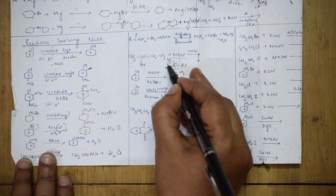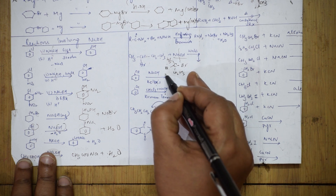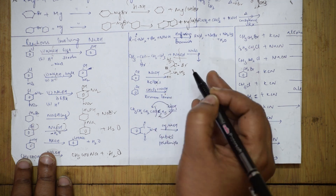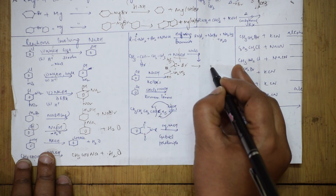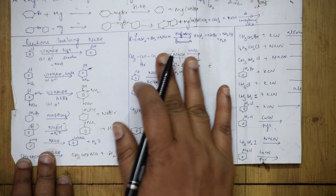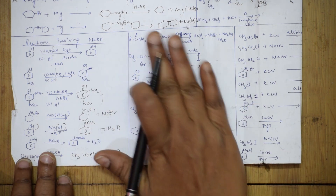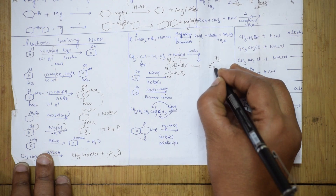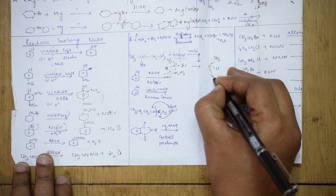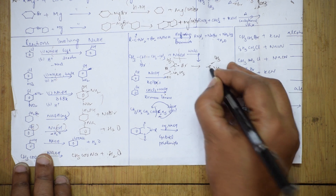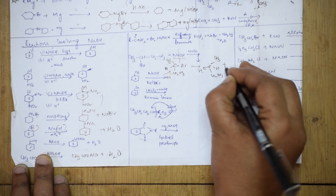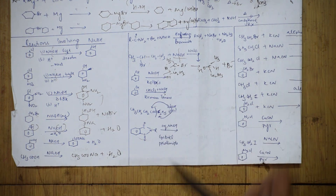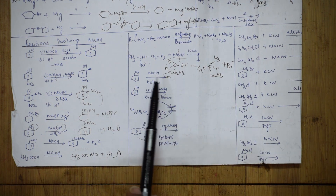Since hydrogen is a smaller atom, OH⁻ attacks from one side and the configuration inverts — this is Walden inversion. The product has CH₃, H, CH₂CH₃, and OH with inverted configuration, and Br⁻ leaves. So this is the product of Walden inversion.